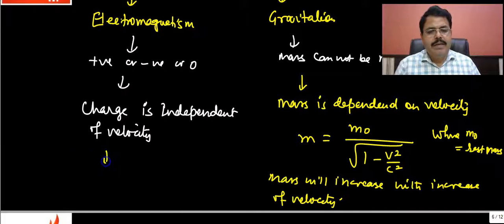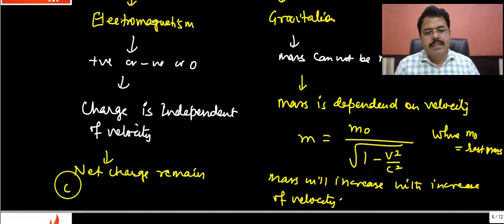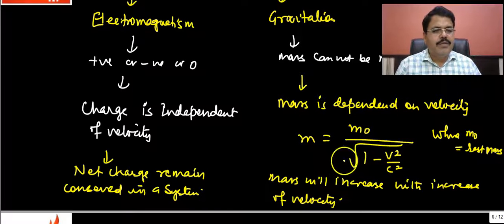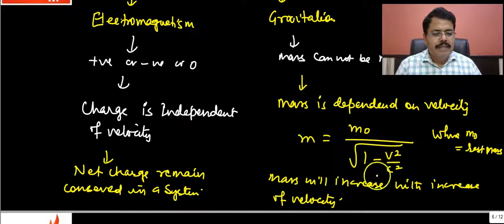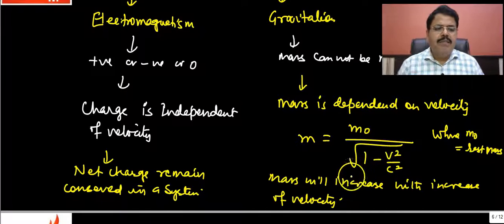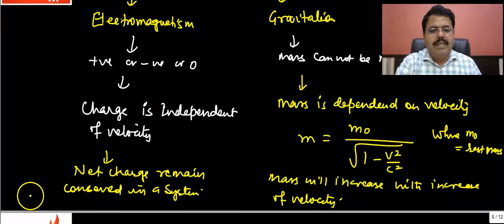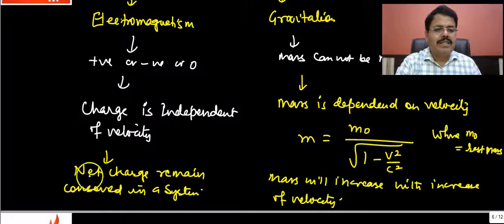Net charge remains conserved in a system. Because mass varies with speed, mass in a particular system can vary — it is not invariably conserved in the same way. But net charge remains conserved. This was an introductory chapter. In the next class, we will talk about what role charge plays and the applications of static charges.